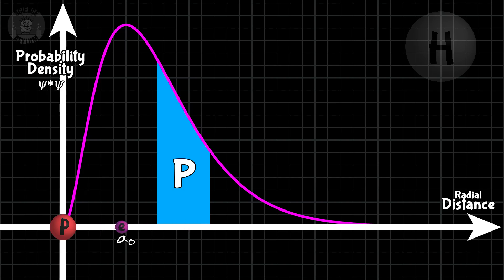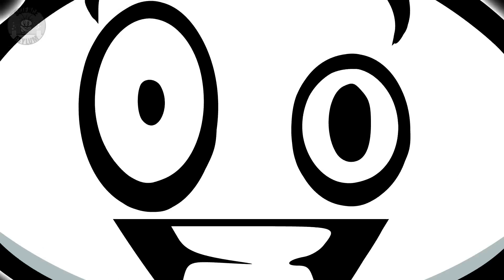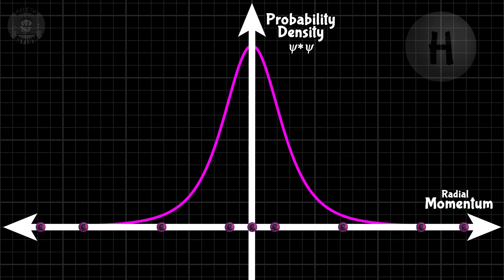So, any smaller area you shade will give you the probability of finding those values when you measure that property. If you're interested in another property, you just transform the wave function. But the same rules apply. Shaded areas are probabilities. A single quantum wave function contains all the probabilities we might want to know about any property of a quantum particle. And ultimately, that's all we get to know.